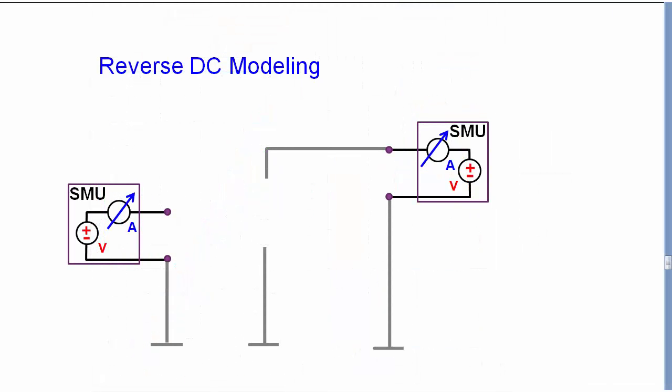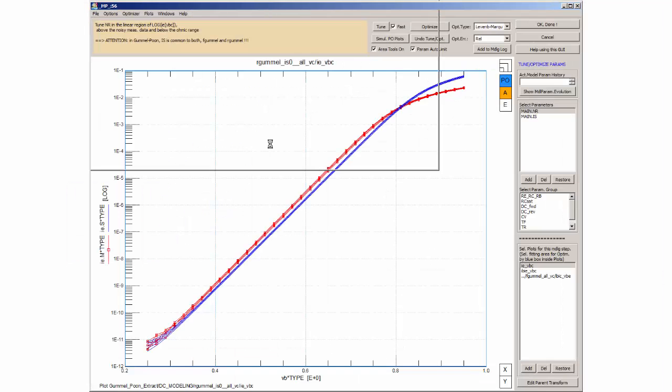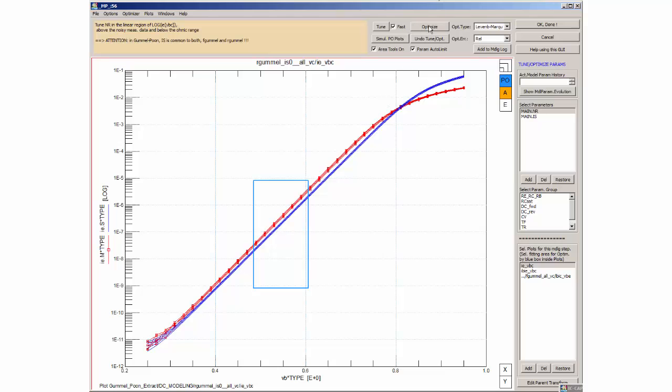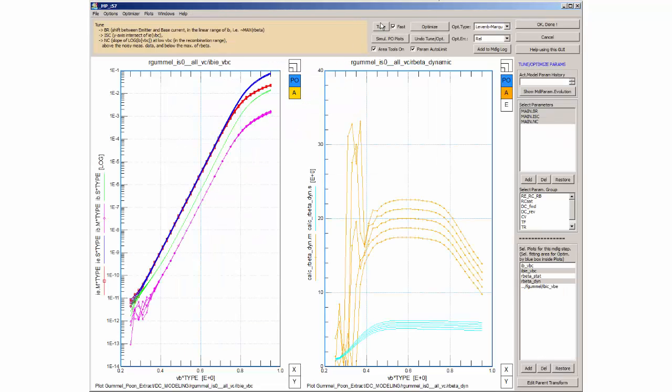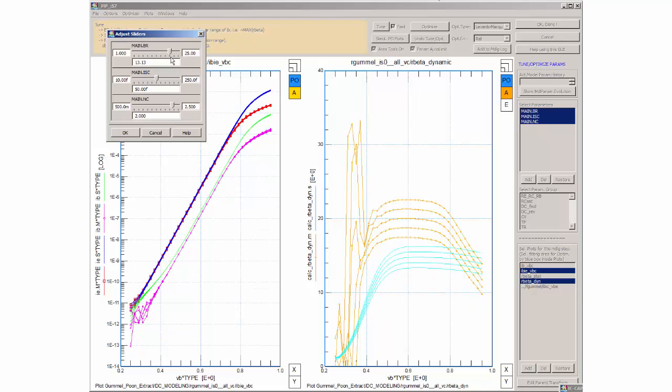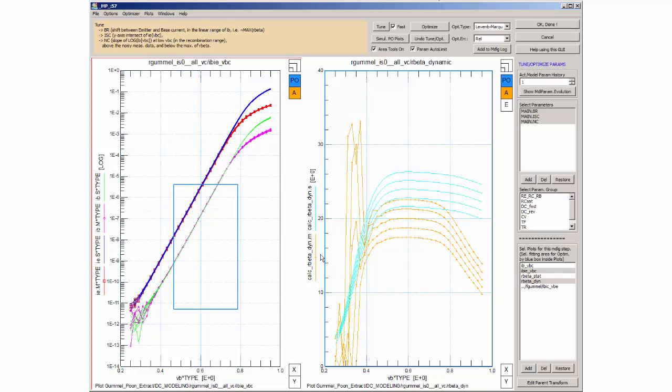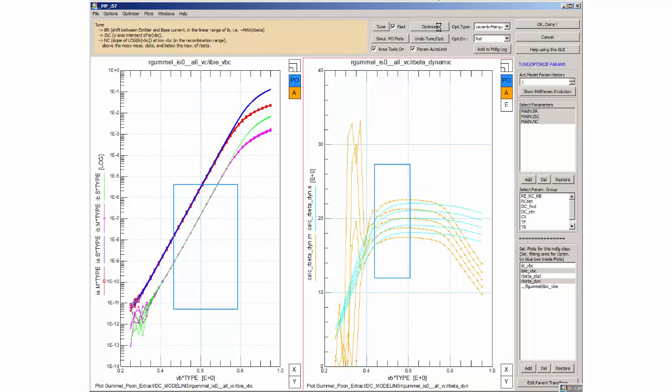Now to the reverse Gummel plots, where the collector is grounded and the emitter is biased. We see the log of emitter current versus base collector voltage. In Gummel-Poon, the y-intercept saturation current parameter IS is the same as for the forward measurements and therefore already modeled. We just fit the slope of the emitter current with parameter NR in the ideal diode range. To fit the second part of the reverse Gummel plot, the base current plot, we first fit the linear range of IB with the reverse amplification BR, and then the recombination range, that is the parameters ISC and NC. The high bias or ohmic range will be fitted in the next step.